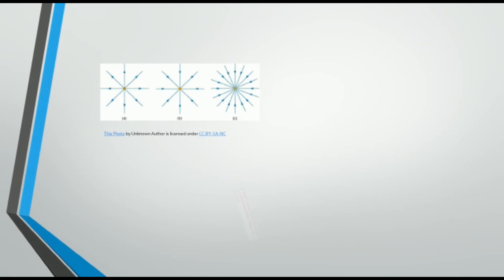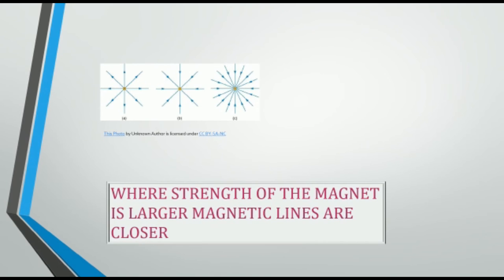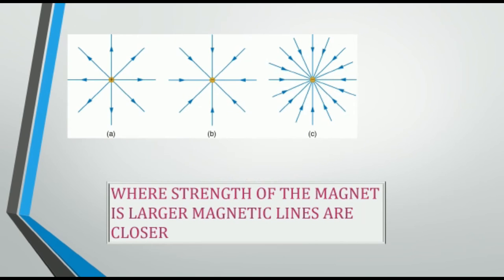The degree of closeness of field lines determines the relative strength of the magnetic field. The magnetic field is strong where field lines are crowded together and weak where they are well separated.